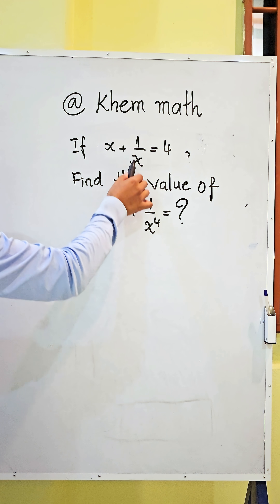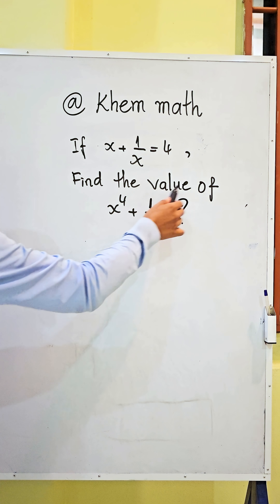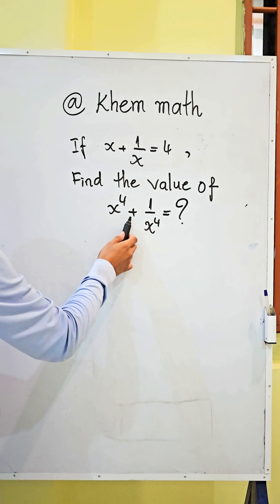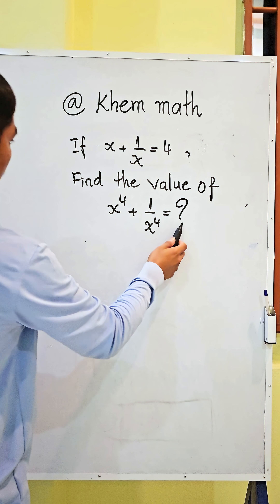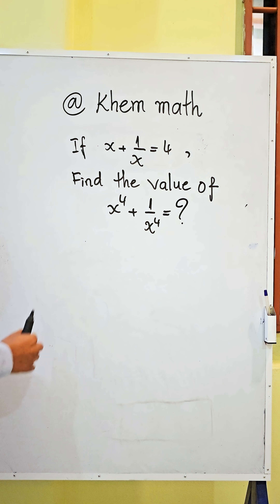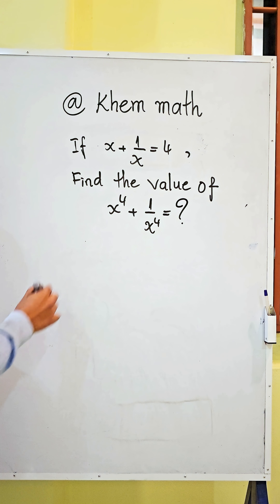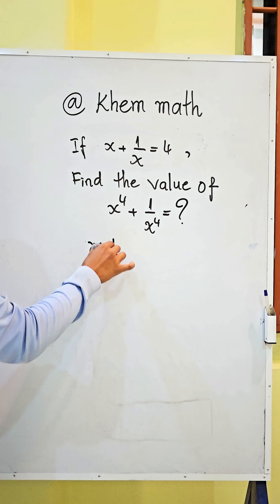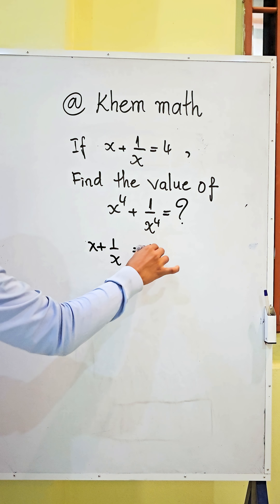If x plus 1 divided by x equals 4, find the value of x to the power 4 plus 1 divided by x to the power 4. The first step: use this equation of x plus 1 divided by x equals 4.